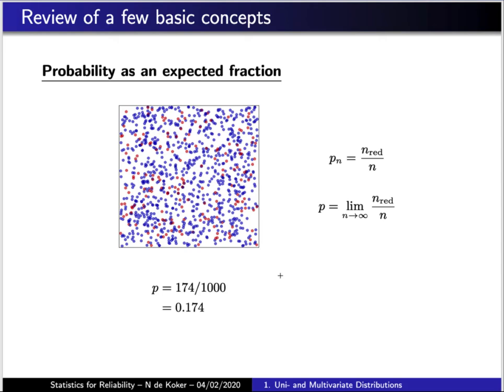Let's suppose that we have a certain number of balls and every given ball can be either red or blue. For example, shown in this box over here there are 1000 balls and of those 1000 balls it was found that 174 are blue. Given that the fraction of red balls is then 0.174, one can reasonably interpret that the chance of any given ball being red is that fraction.